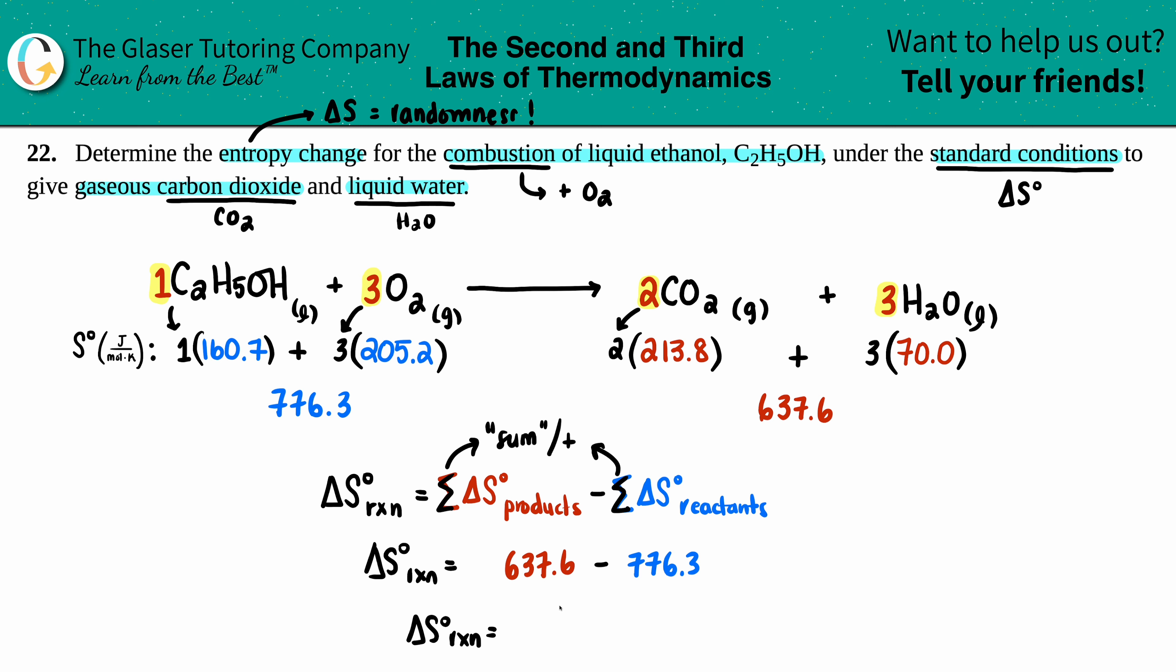Delta S for our whole entire reaction looks like it's going to be a negative value. 637.6 minus 776.3, I get a negative 138.7. The units for delta S, if we're taking it from the back of the book, it's joules per mole times kelvin. That is your answer. We have negative entropy here, which means that we went from something that was more entropic to less entropic. It kind of makes sense because keep in mind that the gases have the highest entropy out of the three states, and you went from three moles of gas to two, so you're losing entropy in your gases, so the negative checks out.